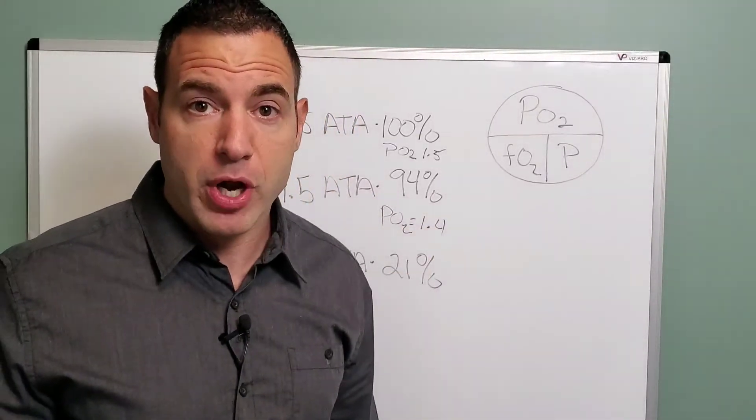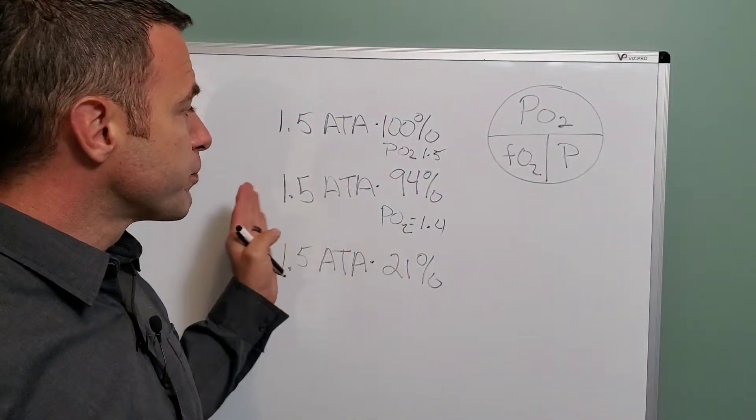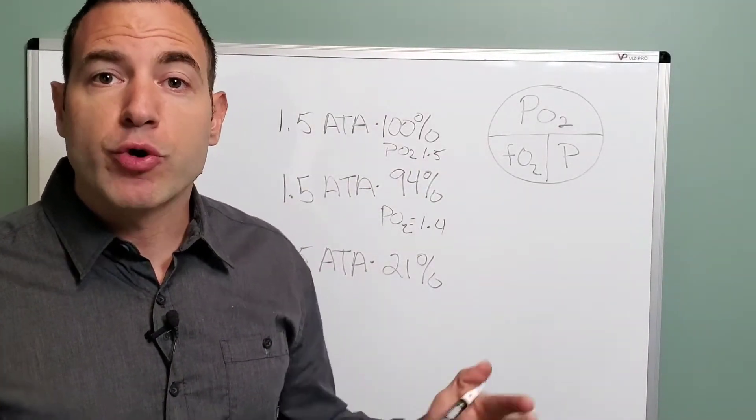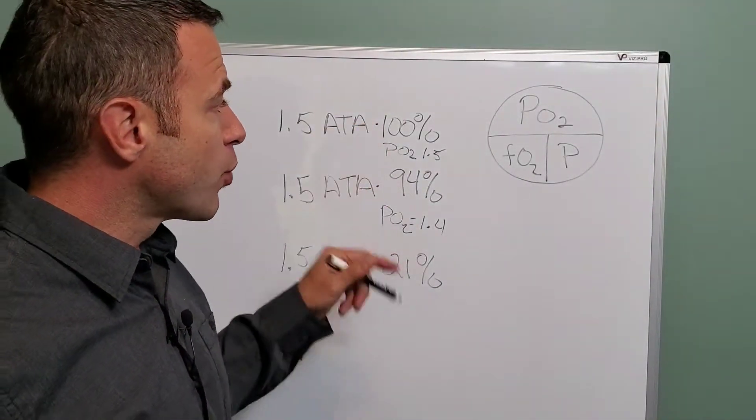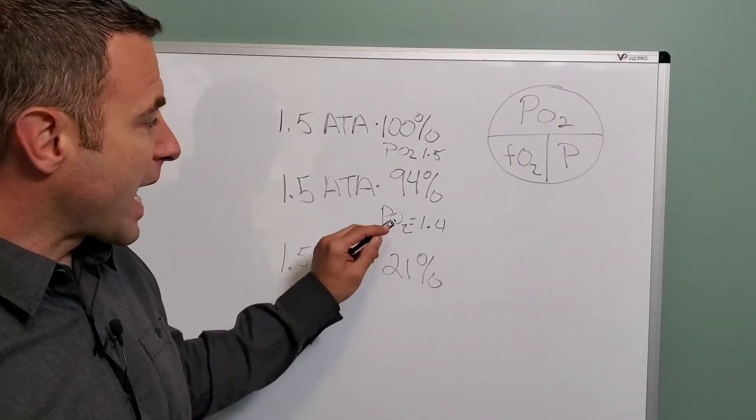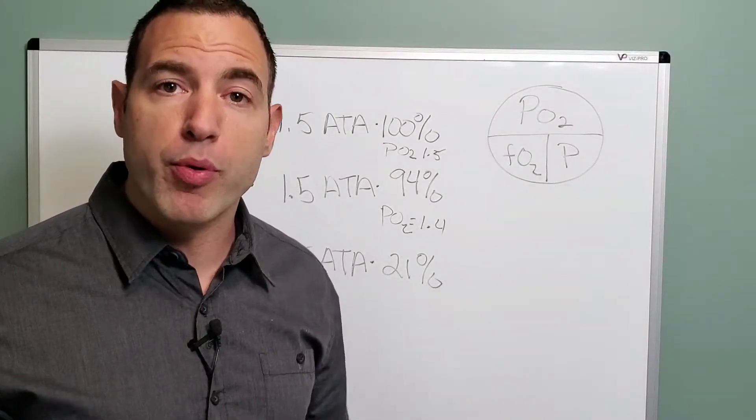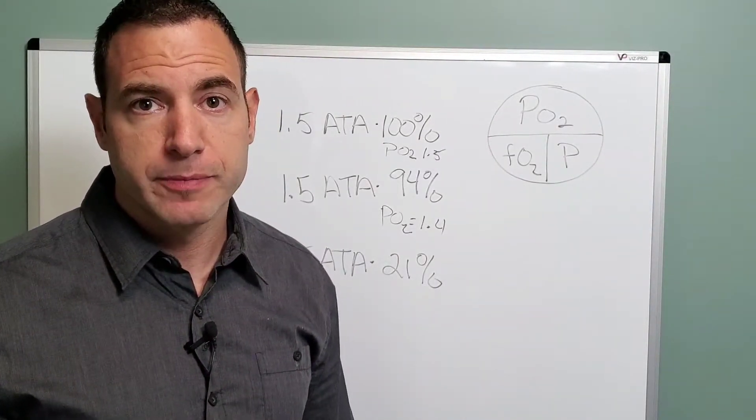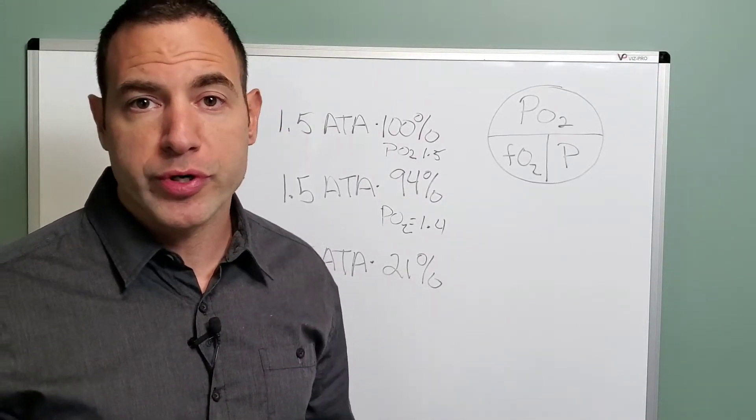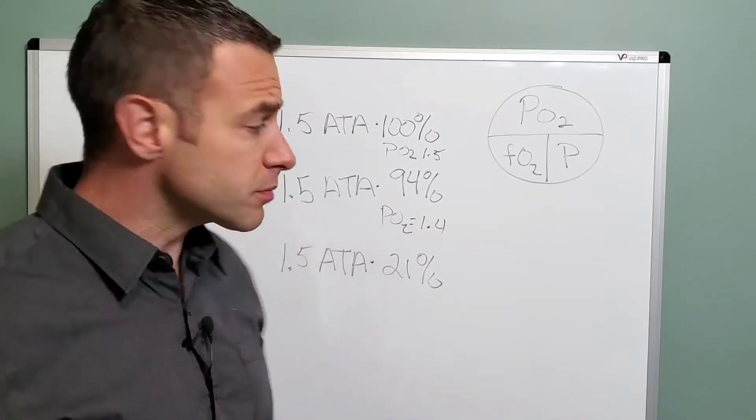And so that's a different number, obviously. It's a lower dosage. So therefore, 1.5 at 94% is not the same as 1.5 at 100%. In order to get a similar dosage, what we would need to do is we would need to go to 1.6 at 94% oxygen. That would get us a 1.5 PO2. So again, you could manipulate pressure and oxygen levels in order to get a very similar dosage for the patient.